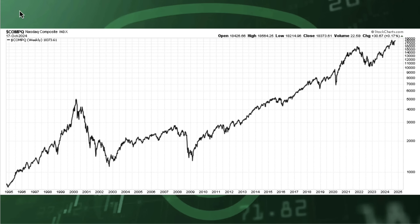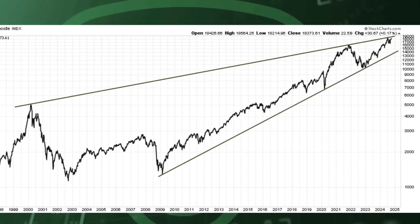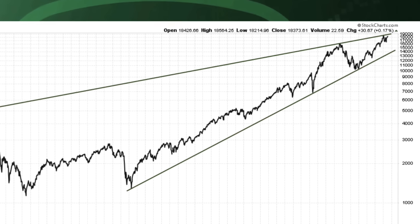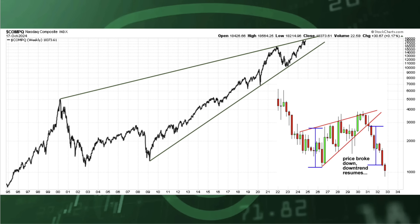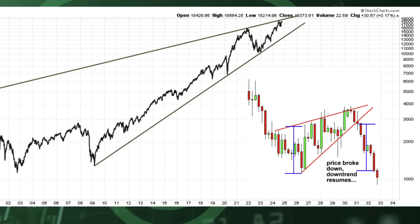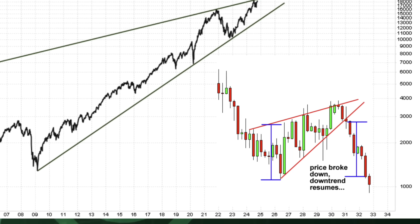This is the Nasdaq Composite. This is the Nasdaq Composite with some lines drawn on it, highlighting that it is a rising wedge structure. And if it actually met a measured move, everything would come to a halt.